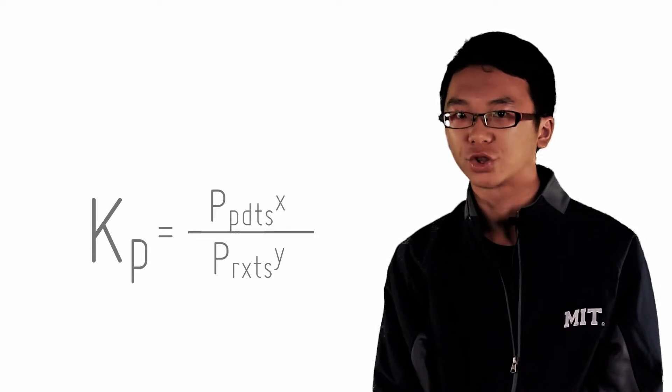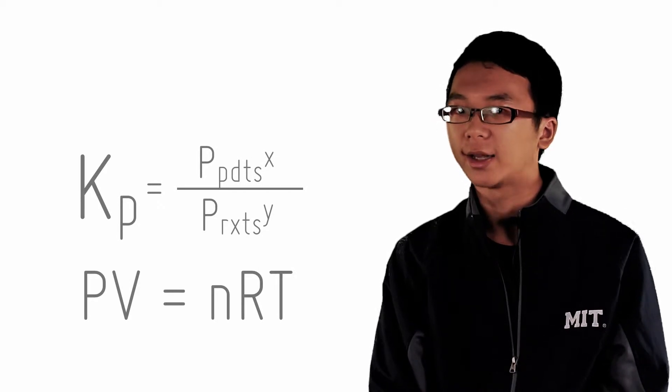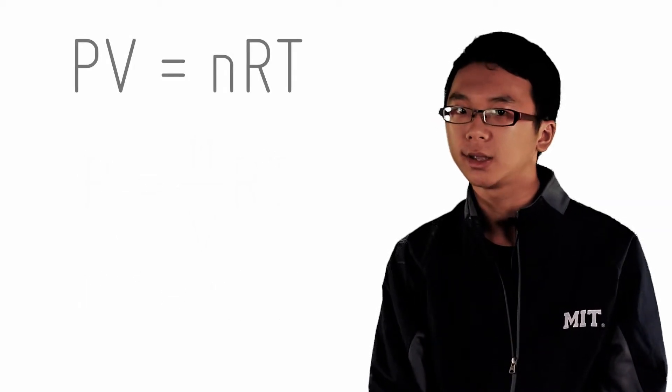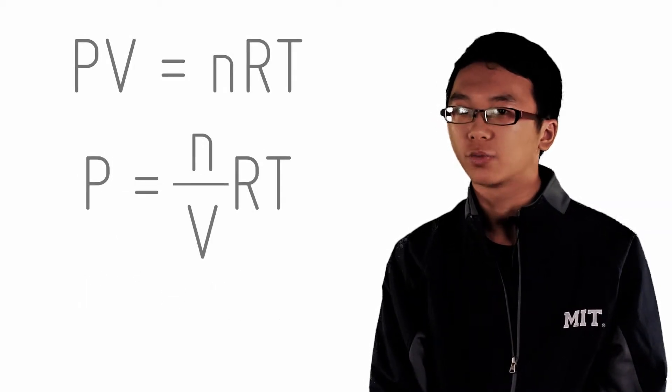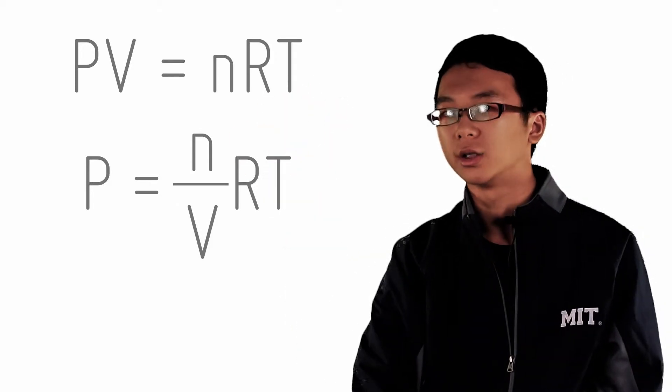How can we convert pressure to concentration? We can, using the ideal gas law, PV equals nRT. Moving V to the right, we have P equals n/V multiplied by RT.